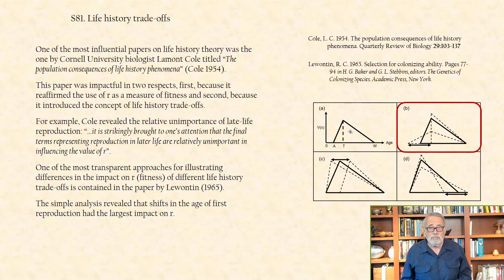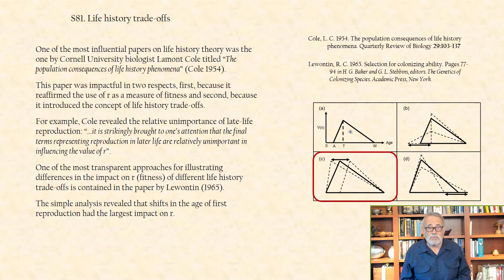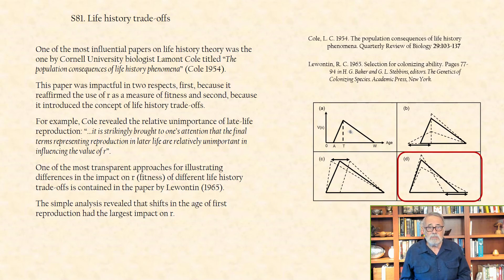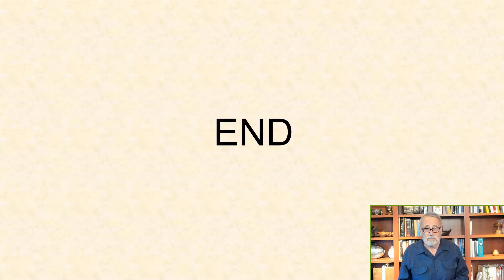In panel B, we have shifts in the age of first reproduction, A. In panel C, we have shifts in the age of T, the turning point. And in panel D, the shifts in the age of last reproduction, W. Thank you.